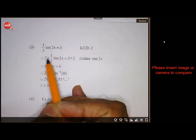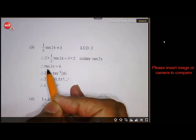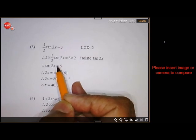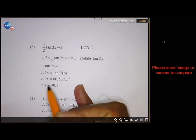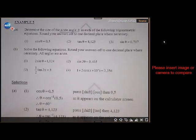It doesn't matter. Then you get tan 2x. Then you're going to say shift tan of 6, and then you get 2x, and then divide by 2. And then the last one is this one here.